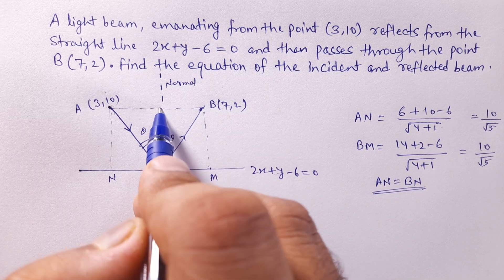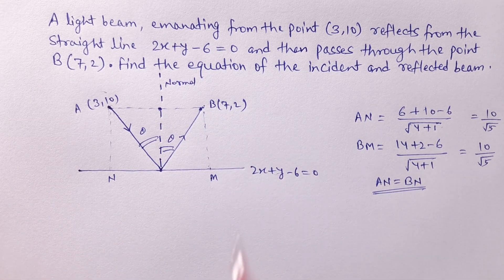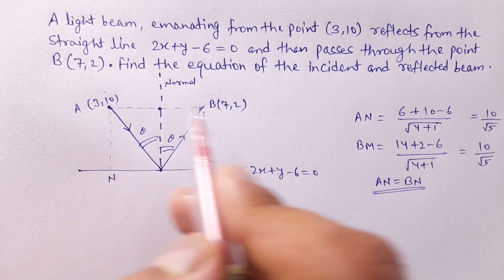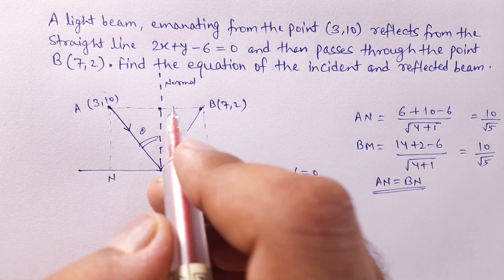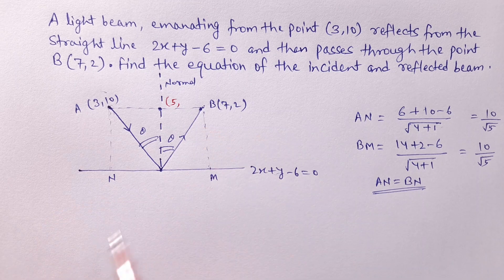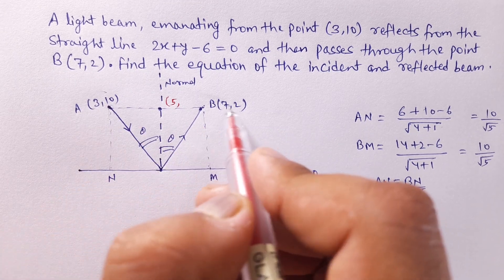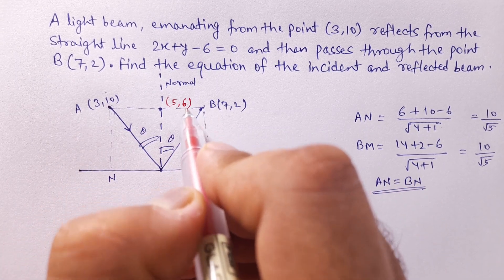So we find the midpoint coordinates: x = (7+3)/2 = 10/2 = 5, and y = (10+2)/2 = 12/2 = 6. So the midpoint coordinate is (5, 6).